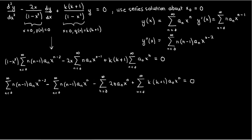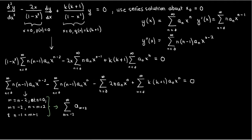We create a dummy index m equal to n minus 2, so when n equals 0, m equals negative 2. We replace n by m plus 2 and n minus 1 by m plus 1, so the summation becomes the sum from m equals negative 2 to infinity of a sub m plus 2 times (m+2) times (m+1) times x to the m. Notice that when m equals negative 2 or negative 1, the whole term becomes 0, so we can safely start the series at m equals 0.